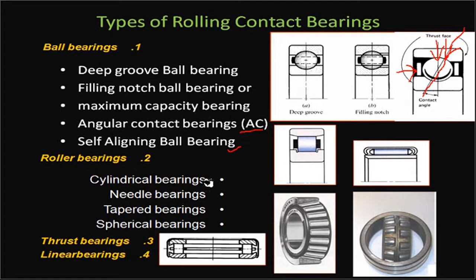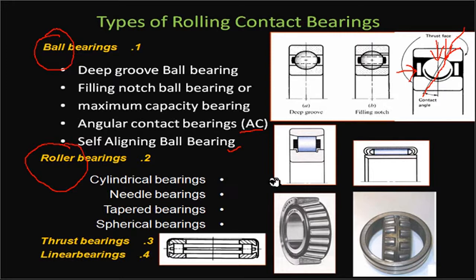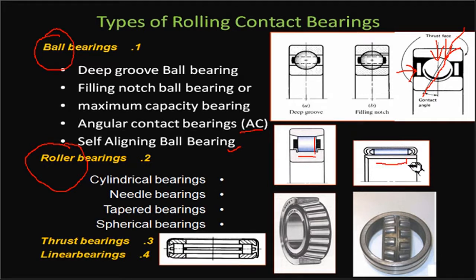Now we discuss roller bearings, where the rolling element is a roller — a cylindrical component — rather than a ball. When the roller has a particular length and diameter, it is called a cylindrical roller bearing. When the length of the cylinder is very large compared to its diameter, it is called a needle bearing.